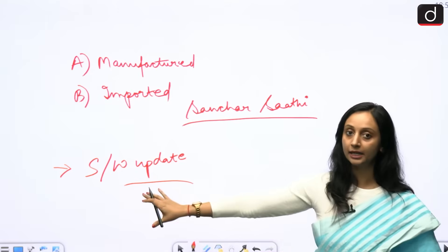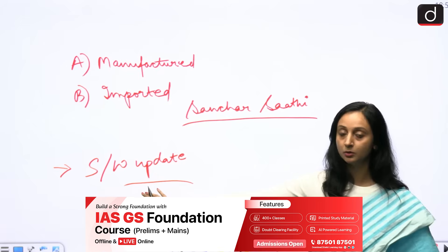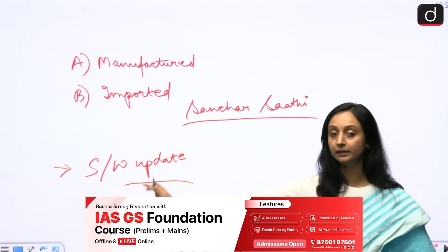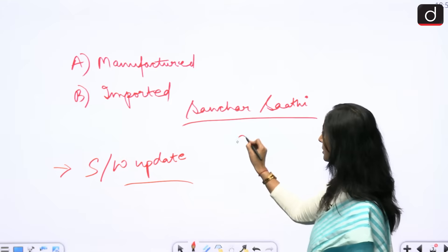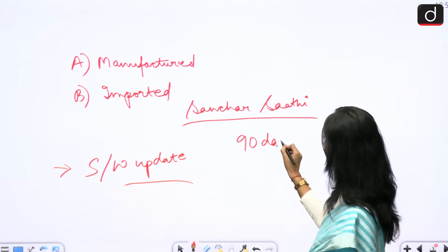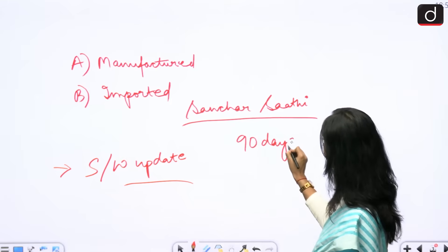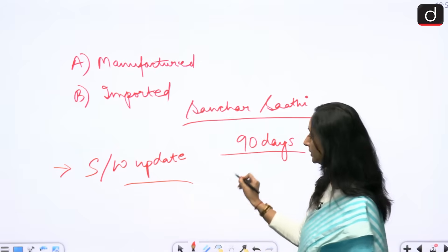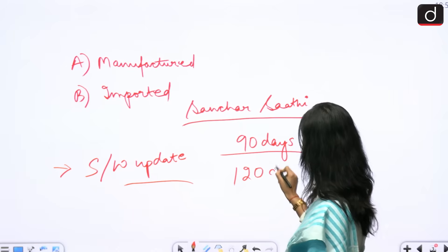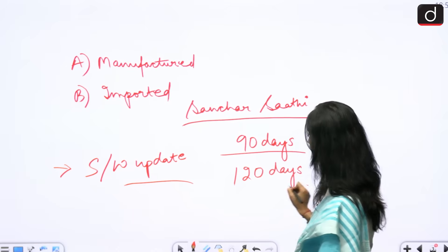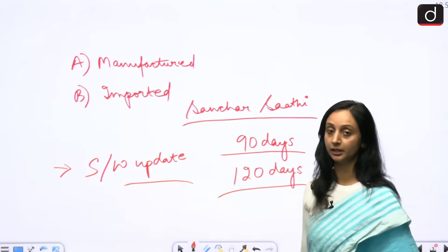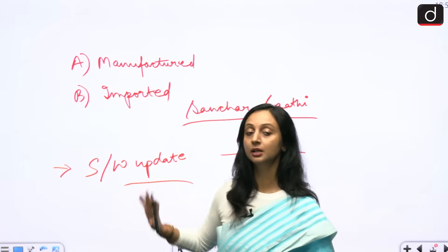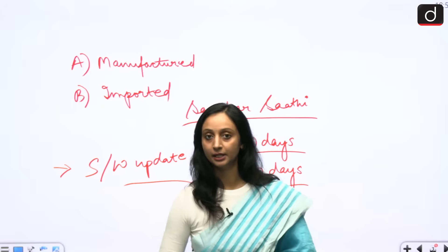All this has an implementation timeline. Mobile manufacturers will have to complete the implementation within 90 days, and a report also has to be submitted within 120 days. So all mobile phones in India are going to be pre-installed with the Sanchar Saathi mobile application.